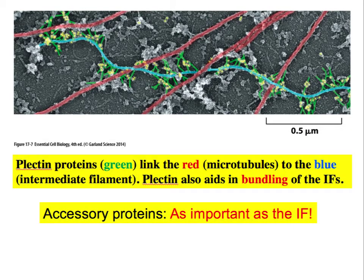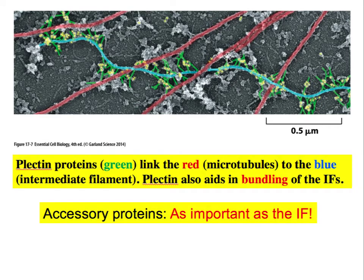The presence of intermediate filaments alone is not enough — you need proteins to couple them to the surrounding cytoskeleton or cell surface. One of the most common linker proteins is plectin. In electron micrographs, plectin is shown in green connecting the blue intermediate filaments to the red microtubules. Microtubules can be easily broken under tension, so they are stabilized by being cross-linked to the tension-bearing intermediate filaments via plectin.